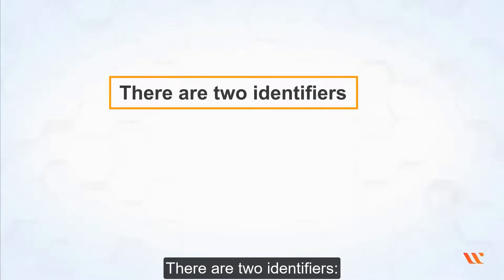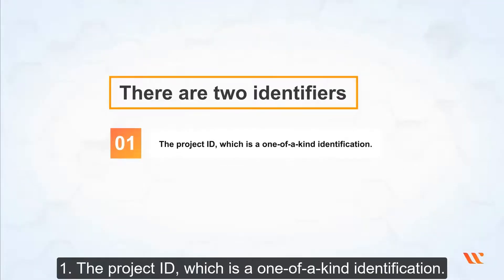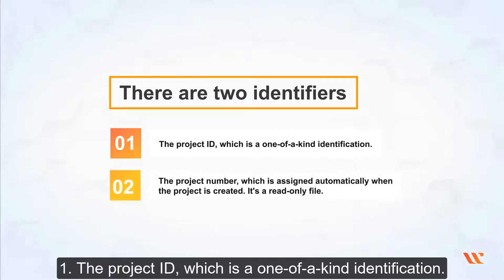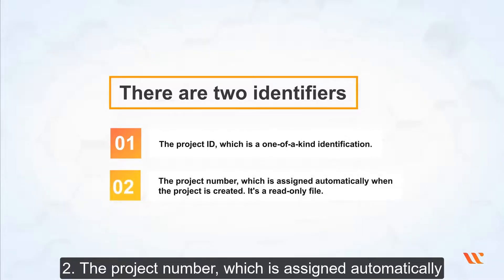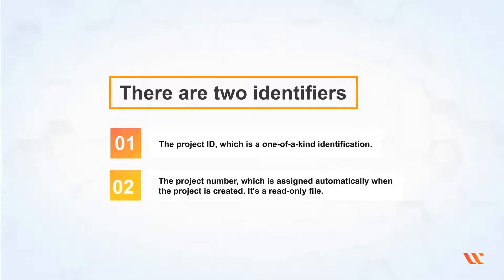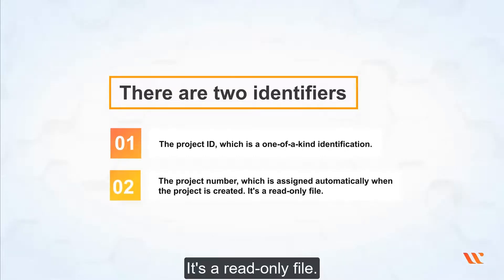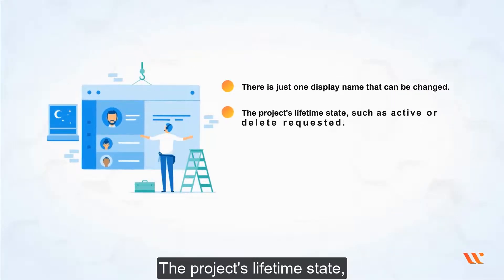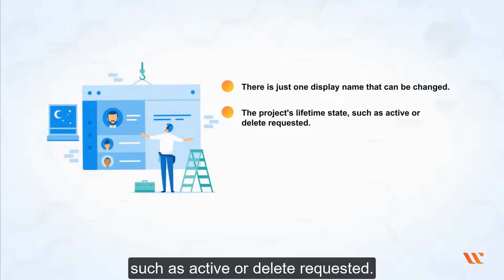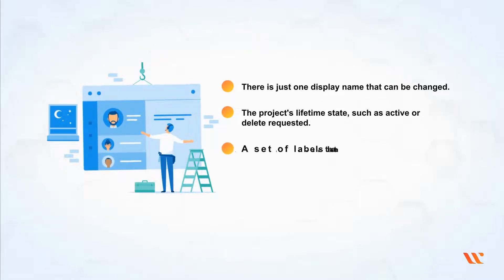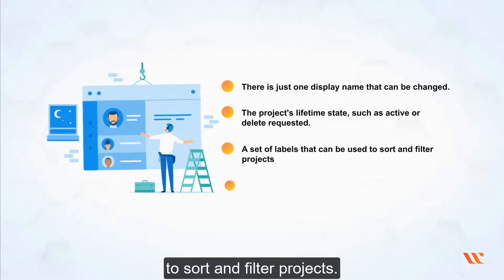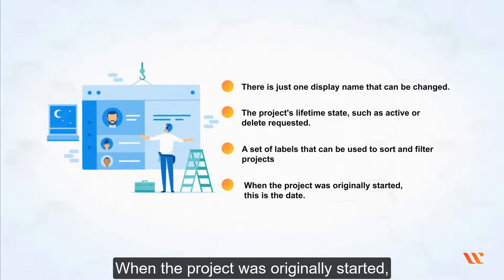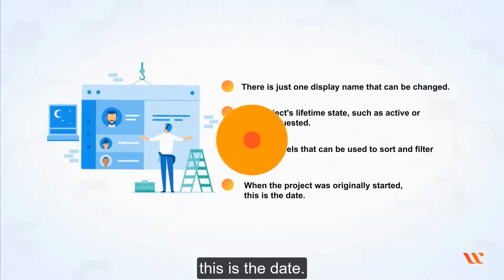Every project includes two identifiers: the project ID, which is a one-of-a-kind identification, and the project number, which is assigned automatically when the project is created and is a read-only field. There is just one display name that can be changed. The project's lifetime state such as active or delete requested, a set of labels that can be used to sort and filter projects, and the date when the project was originally started are also included.